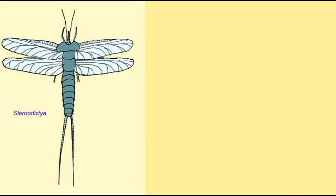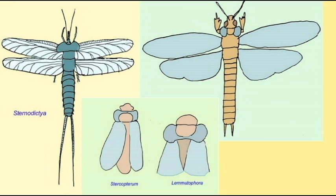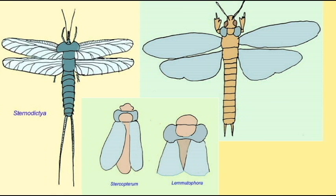Some possessed wing buds on their first thoracic segment; no insects alive today have these. Some of the early wings were very primitive and were held rigidly out from the sides of the body, or lacked the venation patterns that later insects possess.